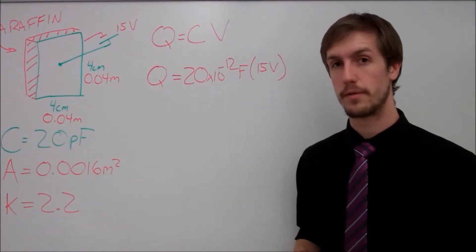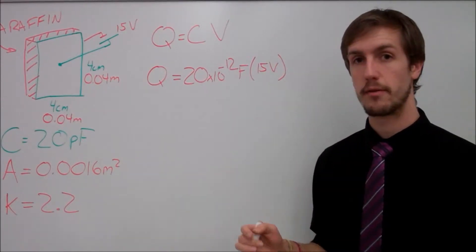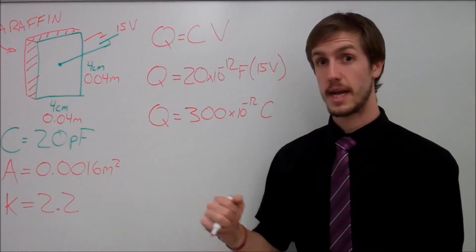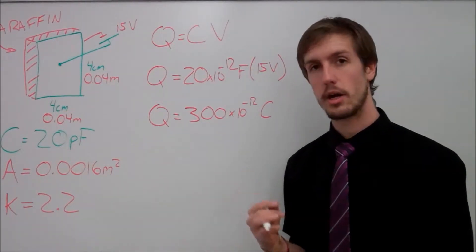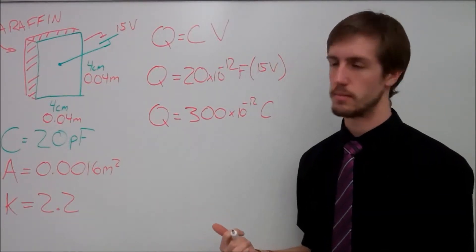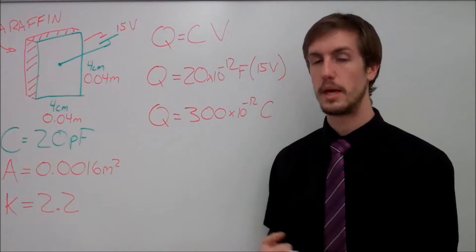20 times 10 to the negative 12th farads multiplied by 15 volts ends up giving me a total charge in coulombs of 300 times 10 to the negative 12th coulombs, or I could also write that as 0.3 nanocoulombs. I could also write it as 300 picocoulombs.